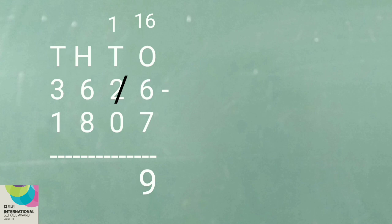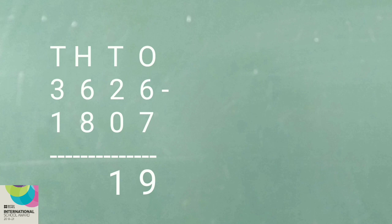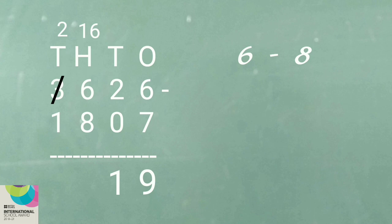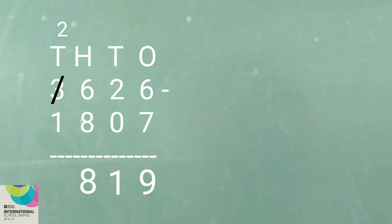Next step, subtract the tens place digits. That is 1, minus 1 borrowed, minus 0, equals 1. Next, subtract the hundreds place digits — that is 6 minus 8. Since it is not possible, borrow one from the thousands place. So the hundreds place becomes 16. And now subtract — 16 minus 8 equals 8. Subtract the thousands place digits: 2 minus 1 borrowed equals 1.